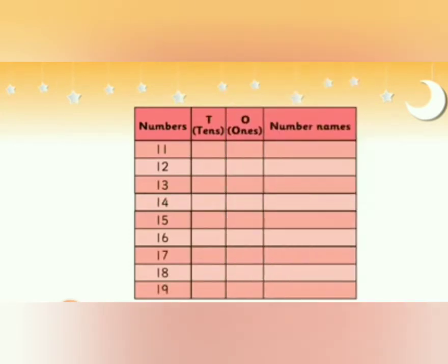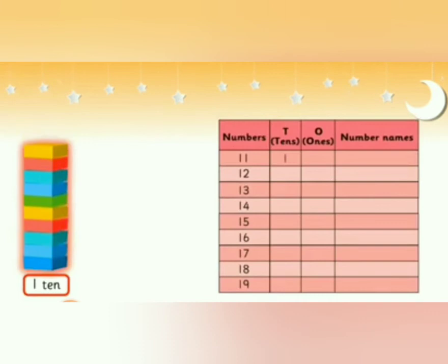This is one ten, means ten blocks together. Now a single block, that is one block, is eleven. Two blocks, twelve. Three blocks, thirteen. One ten and four blocks, fourteen.